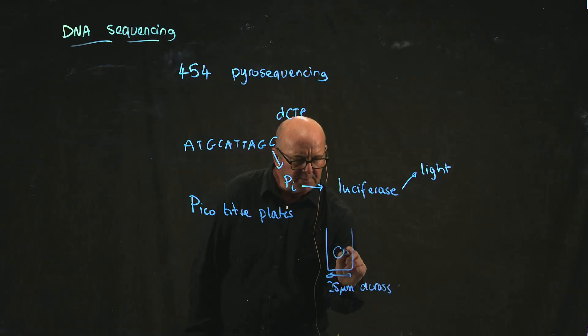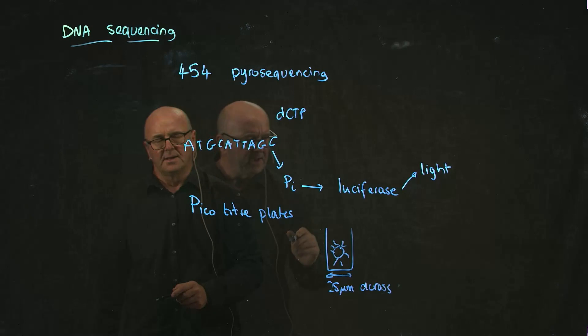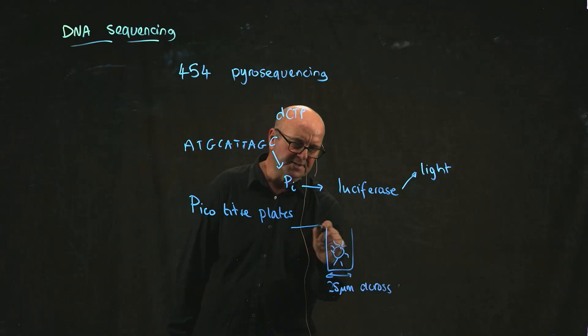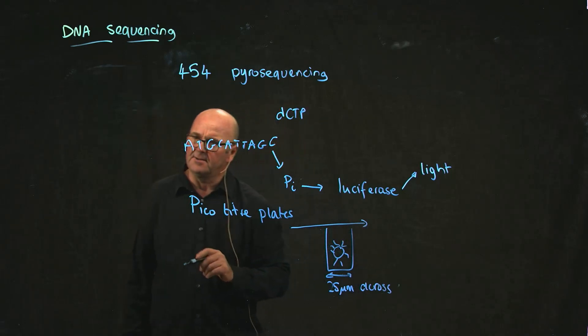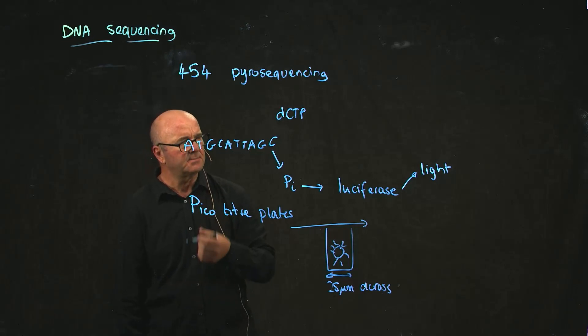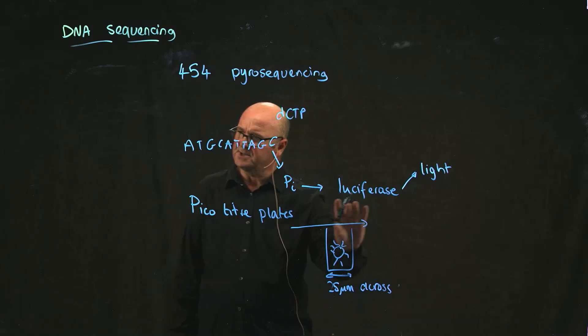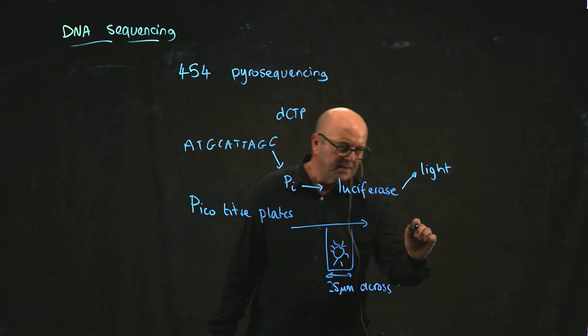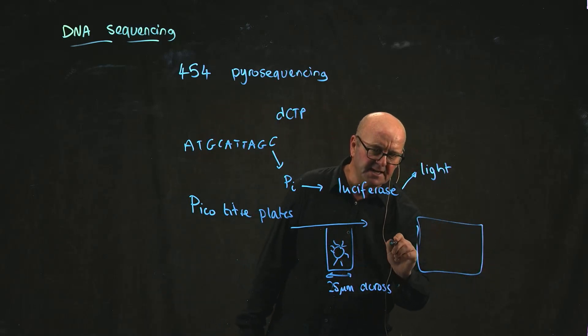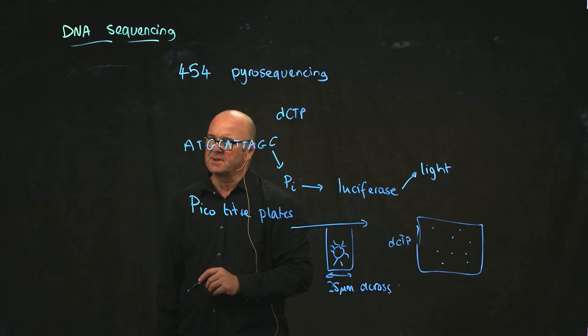You get a little bead with some DNA attached to it, and then you wash across the top either dCTP, dTTP, dATP, or dGTP one at a time. So you wash across the dCTP. Then on the plate, as you add, for example, dCTP, every well where you add a C gives you a flash of light.